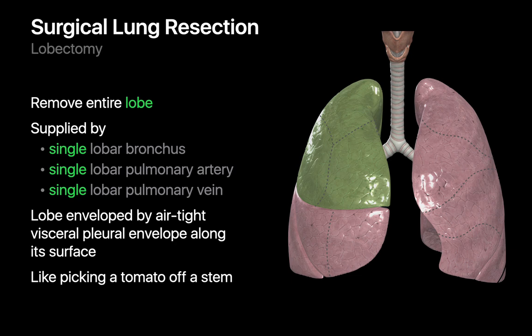In a lobectomy, a single lobe of a lung is removed. Resecting a lobe is also like plucking a tomato off a stem. Each lung lobe is encased by its own visceral pleural membrane independent of the other lobes of that same lung, and each lobe is connected to the rest of the body by a single airway, a single pulmonary artery, and a single pulmonary vein.